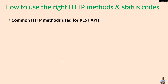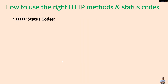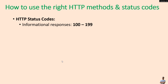There are several common HTTP methods used for REST API development: the POST method for creating a resource, the GET method for reading a resource, the PUT method for updating a resource, the DELETE method for deleting a resource, and PATCH for partially updating a resource.